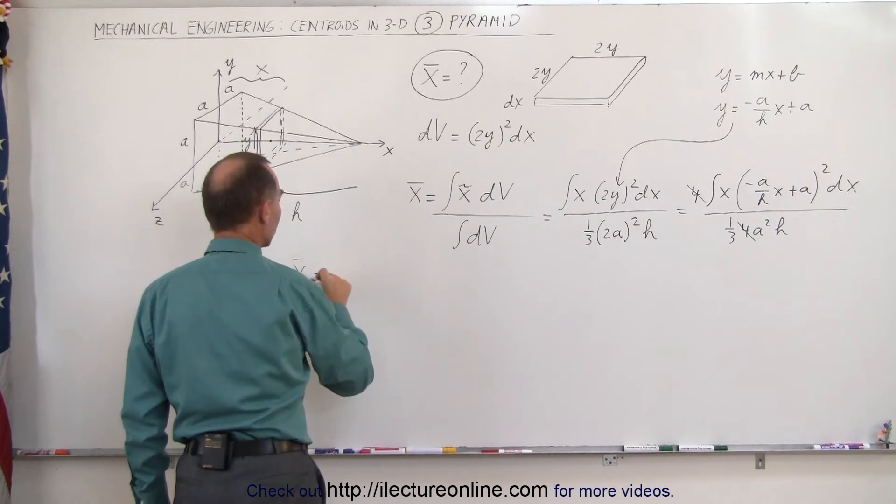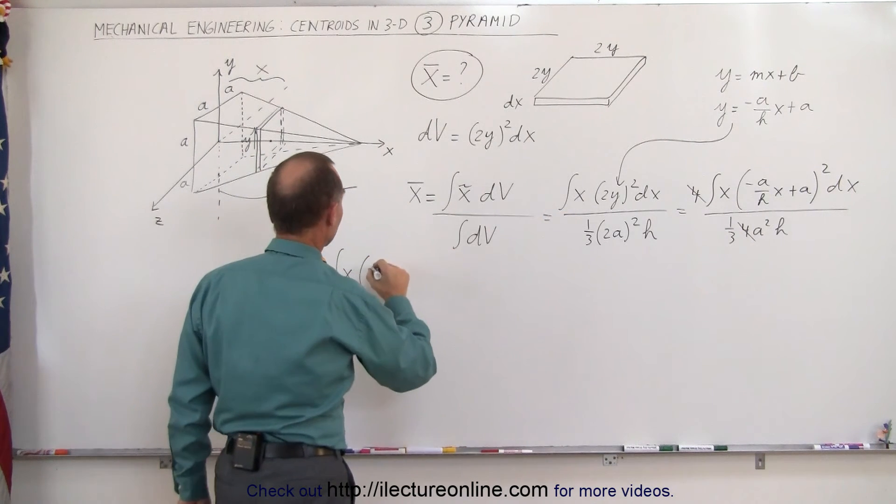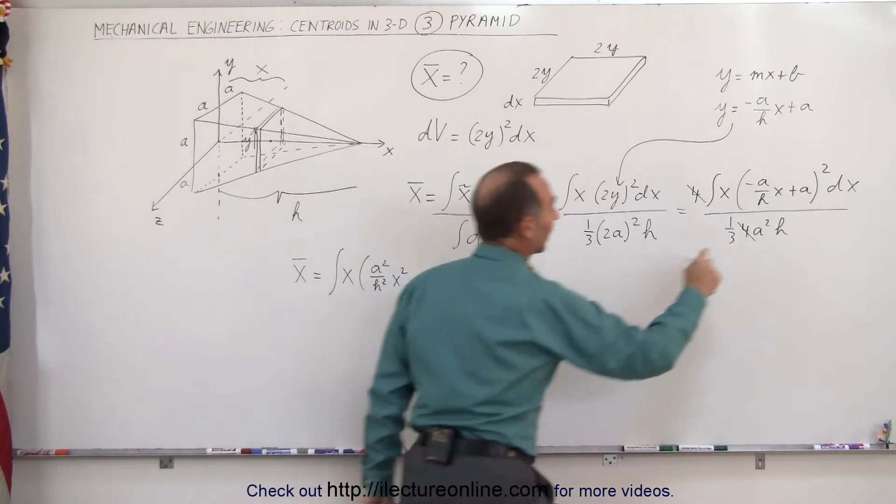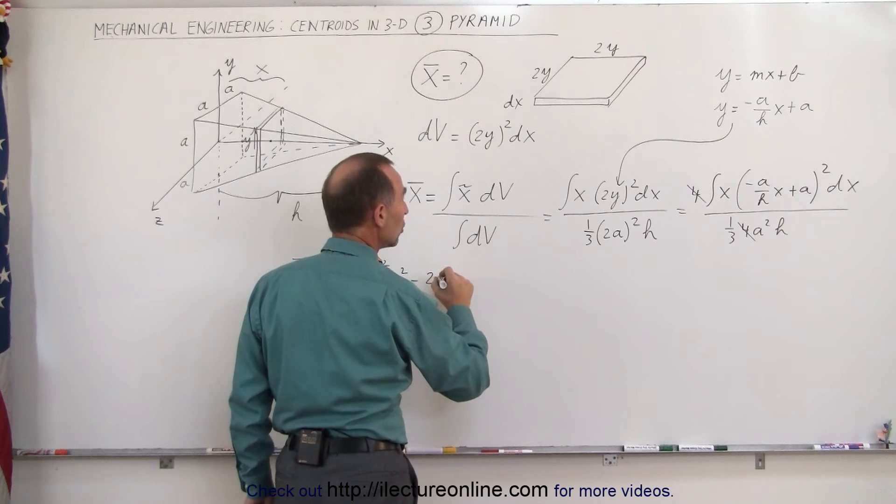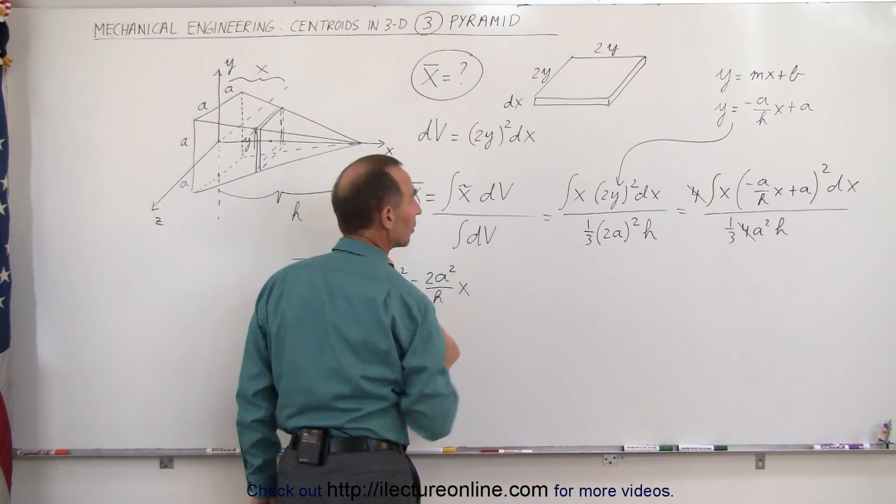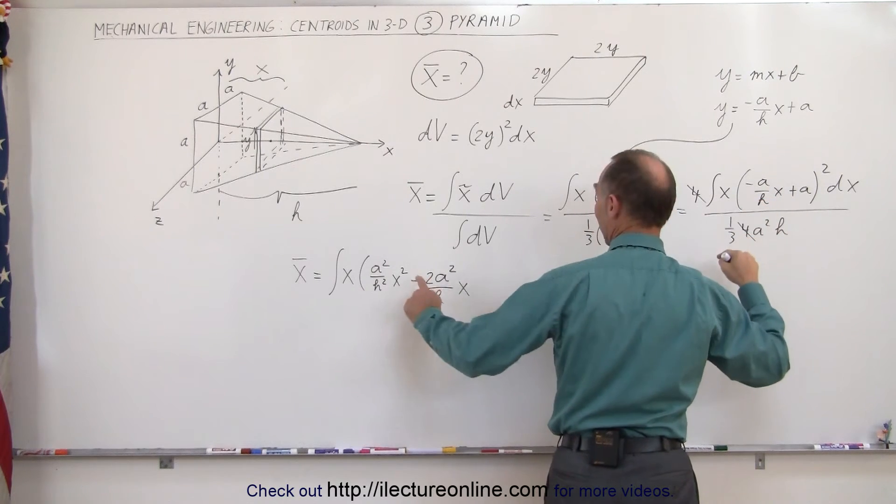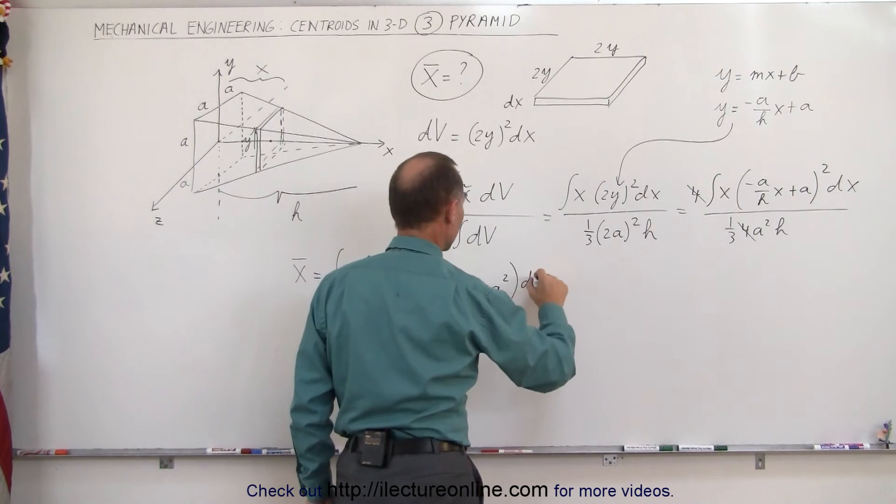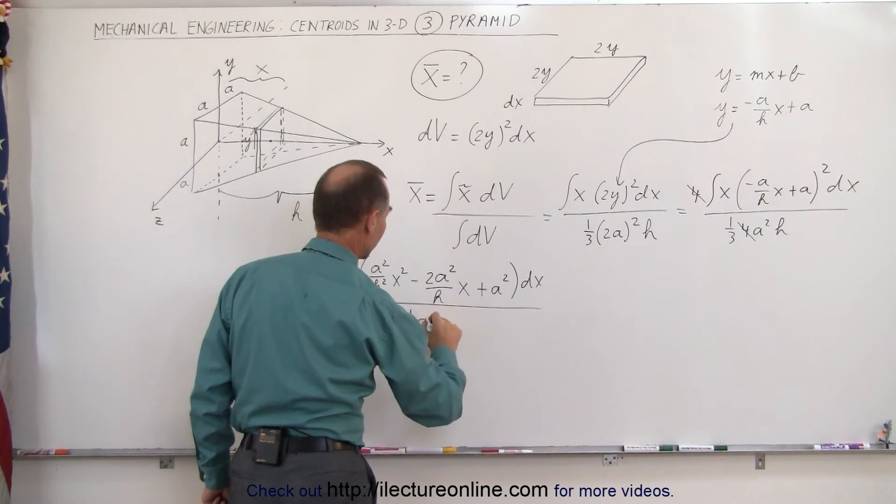The x-coordinate of the centroid is equal to the integral of x times... When we square the first term, we get a squared over h squared times x squared. We multiply this times this and get minus, and then double that, we get minus 2a squared divided by h times x. And then finally we have plus a squared times dx, the whole thing divided by one-third a squared h.